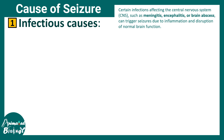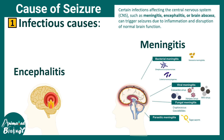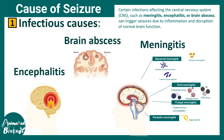Infections can also trigger seizures. These include meningitis, which can be caused by bacteria, virus, fungus, or parasites — it is basically inflammation of the meningeal protection of the brain. There can also be encephalitis, meaning inflammation of the brain tissues, or brain abscess due to bacterial infection. All these infections trigger the likelihood of uncontrolled synchronized brain activity.